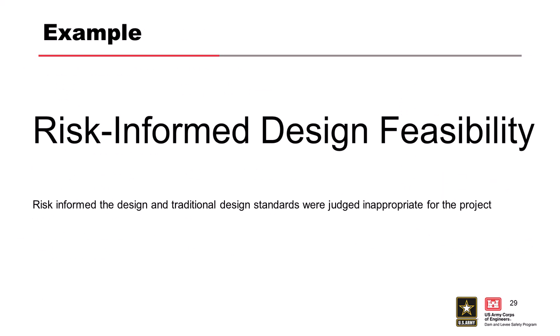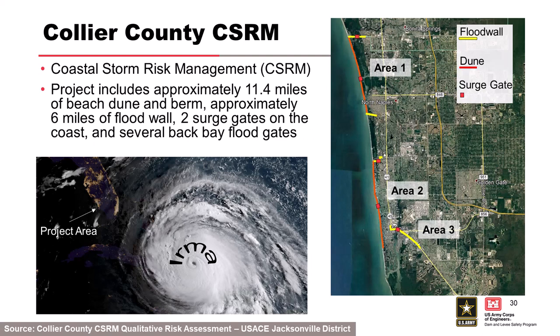One more example: the Collier County Coastal Storm Risk Management Study — a feasibility study in south Florida at the end of its three-by-three-by-three cycle. The project protects against storm surge; Hurricane Irma made landfall right where this project is planned, providing a great co-study case. The proposed system shown in yellow is flood wall, with red being a dune structure connecting to form a system to exclude the 200-year storm from flooding densely developed areas.